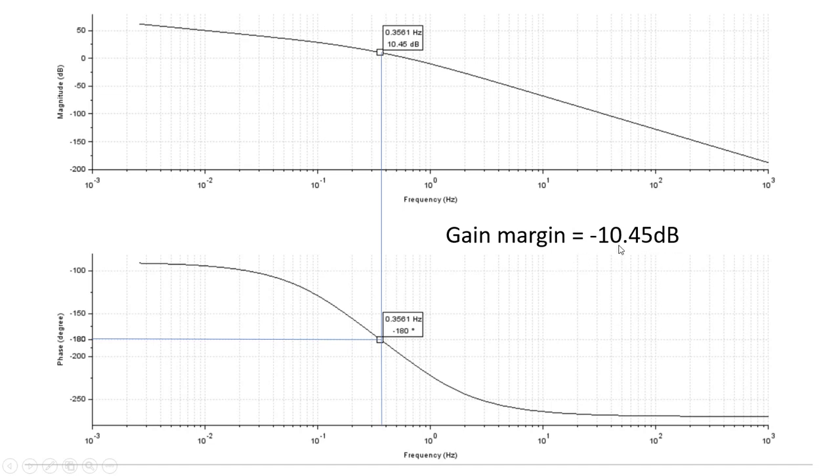So we say that the gain margin is minus 10.45 decibels. In other words, you are 10.45 decibels above zero so you'd have to change it by minus 10.45 to hit zero and that gives you your gain margin. So the way you find gain margin: find where your minus 180 degree point is and just read up from that, then find the difference between zero dB and that gives you your gain margin.